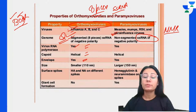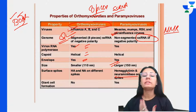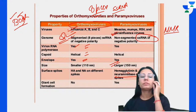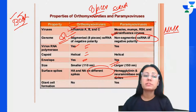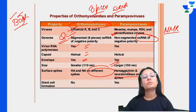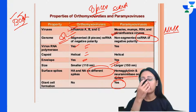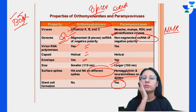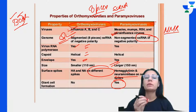Paramyxovirus is the larger virus. Regarding surface spikes: hemagglutinin and neuraminidase are present on the same spike in paramyxovirus, while they are on different spikes in orthomyxovirus. Giant cell formation is seen in the paramyxovirus — specifically in measles. Remember: orthomyxovirus is the segmented one, containing influenza A, B, and C.